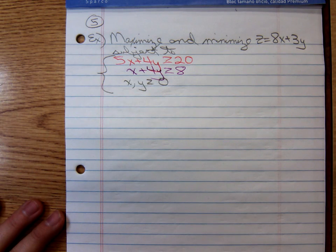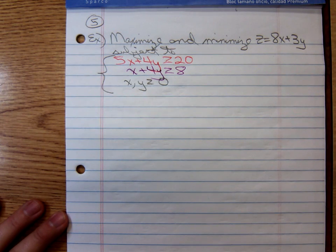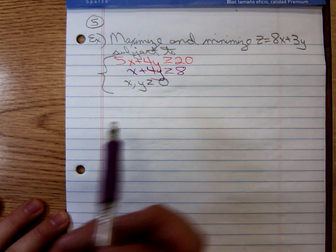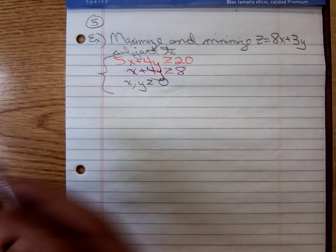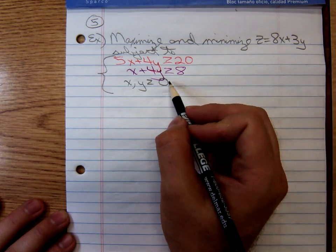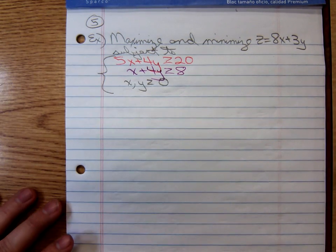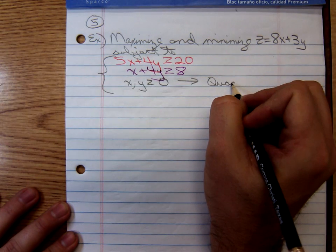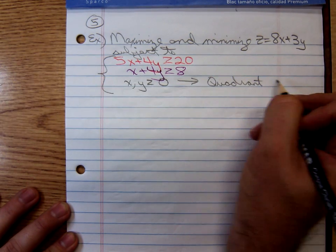Here's the problem. Maximize and minimize the objective function z equals 8x plus 3y subject to 5x plus 4y is greater than or equal to 20, x plus 4y is greater than or equal to 8, and x and y are greater than or equal to 0. Those are my non-negativity constraints. That's just saying that we're only looking at quadrant 1.